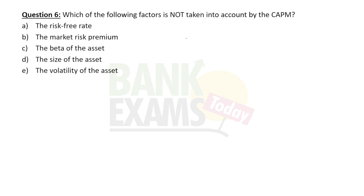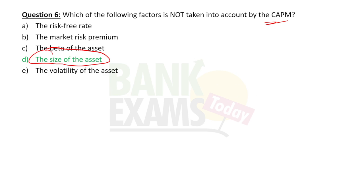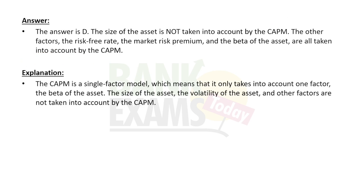Numerical 5: Which of the following factors is NOT taken into account by CAPM? Options include risk-free rate, market risk premium, beta, and size of the asset. The answer is 'size of the asset' — it is totally irrelevant in the CAPM formula. In the CAPM formula, size of the asset is nowhere considered. All other factors — risk-free rate, beta, market risk premium — are considered.